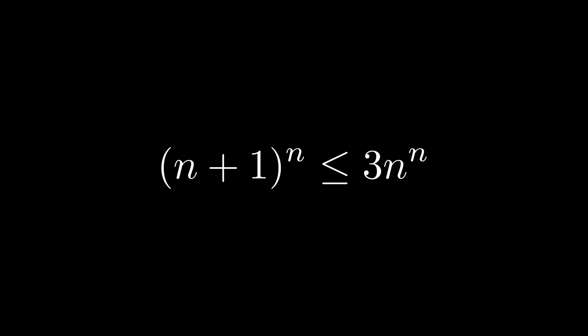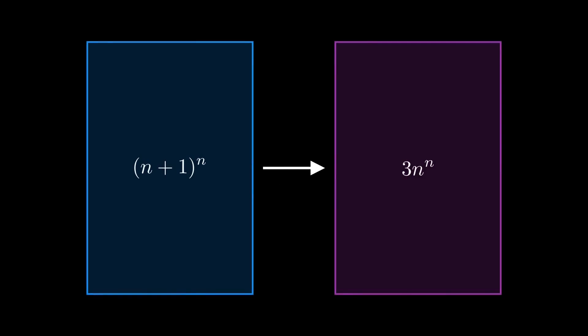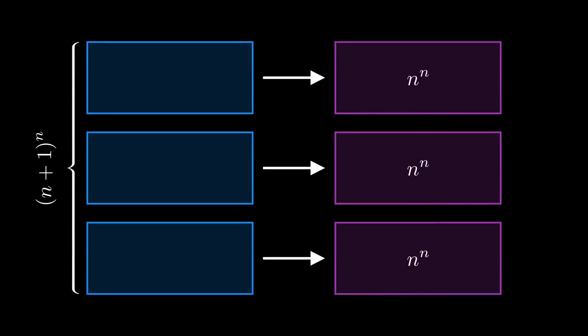So how would we go about proving something like this inequality for all n? Well, there are lots of possibilities, but we're going to do it by building sets that have the same size as each side of our inequality, and then we'll compare those sets. We're going to construct a set of size (n+1)^n and show that we can cut it up into three parts, each of which is smaller than or equal to another set of size n^n.